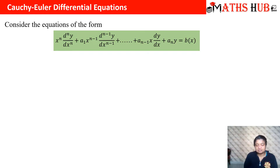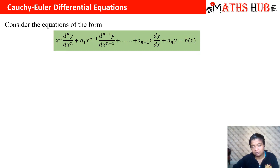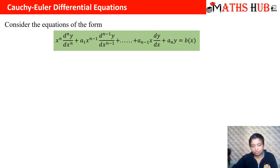What is the difference between this differential equation and the ones we were studying before? In the previous videos, when studying the complementary solution and the particular integral, the coefficients were constants. Now we have the same power of x multiplied with each differential coefficient — x^1 with dy/dx, x^(n-1) with d^(n-1)y/dx^(n-1), and x^n with d^n y/dx^n. The key idea is: if we can convert this into a constant-coefficient DE, we can apply all the previous methods.